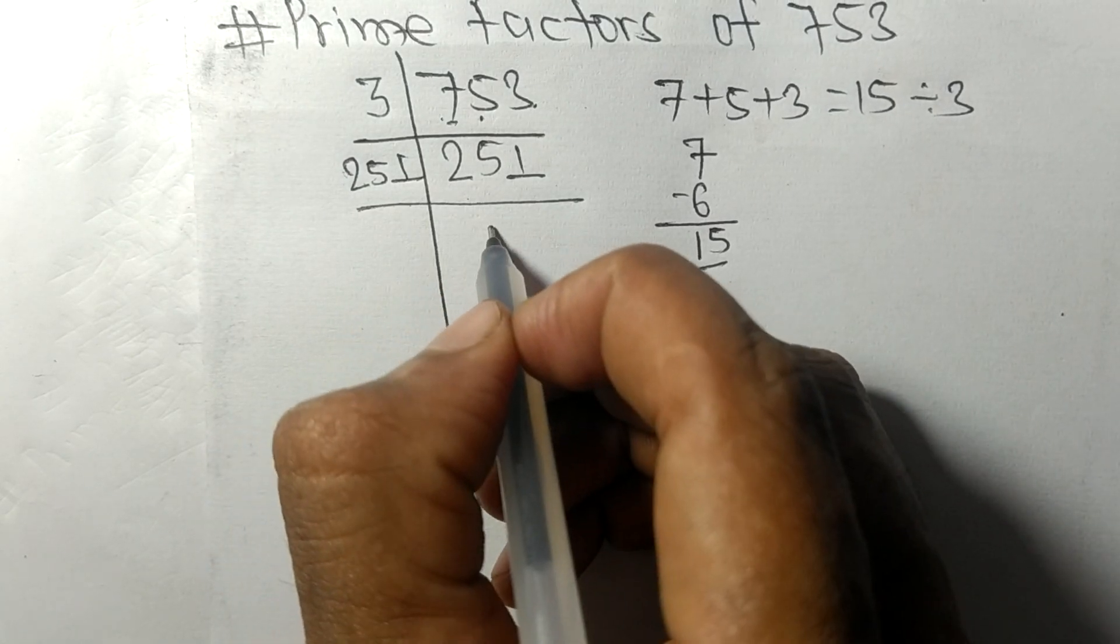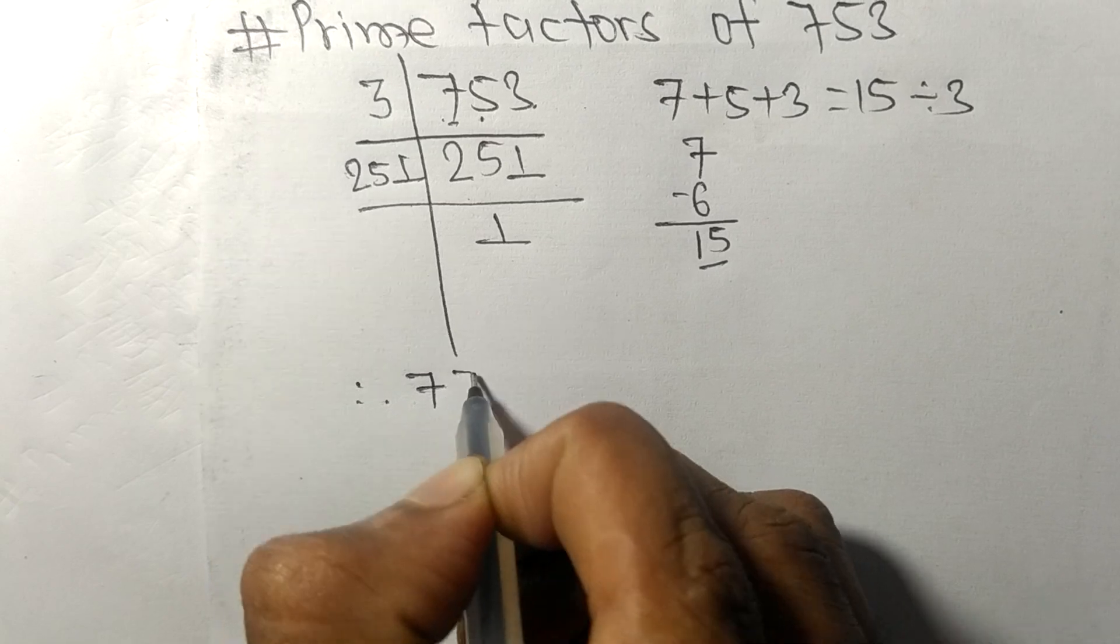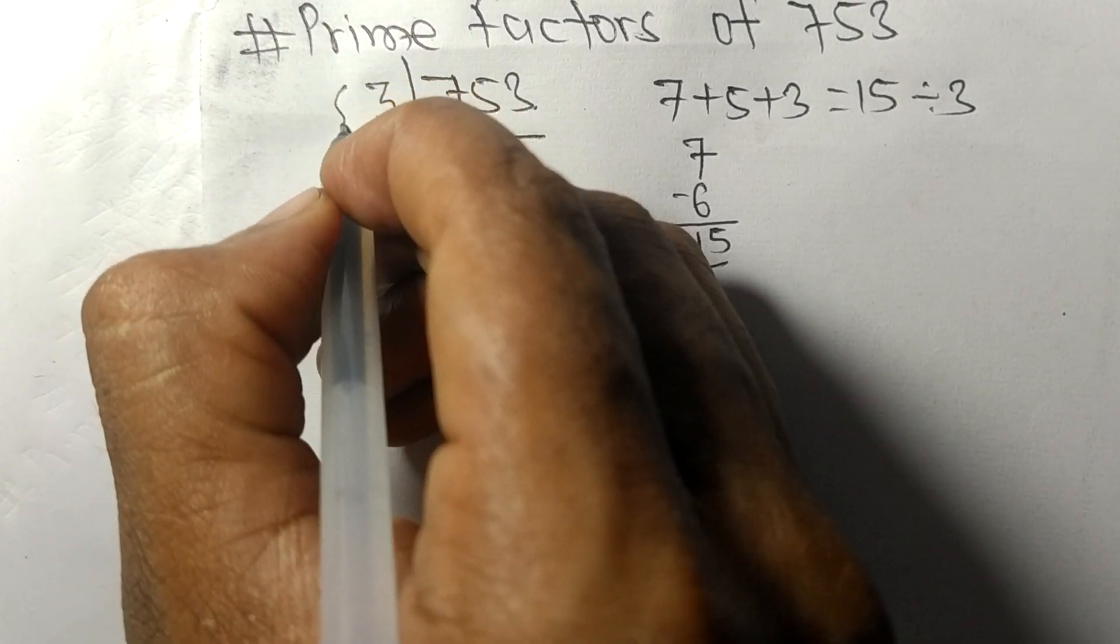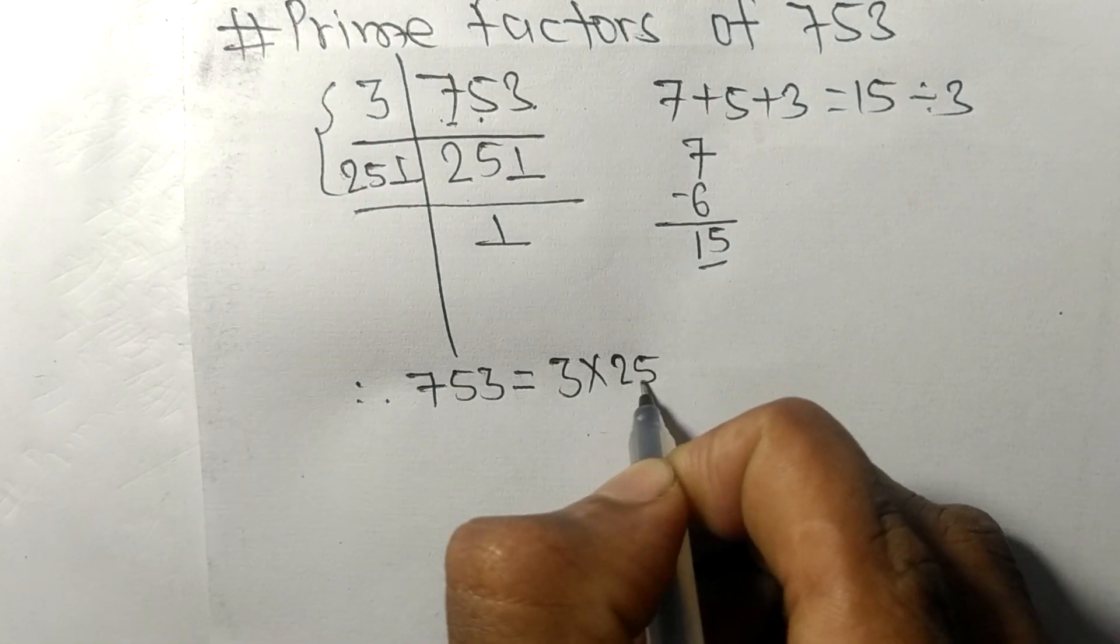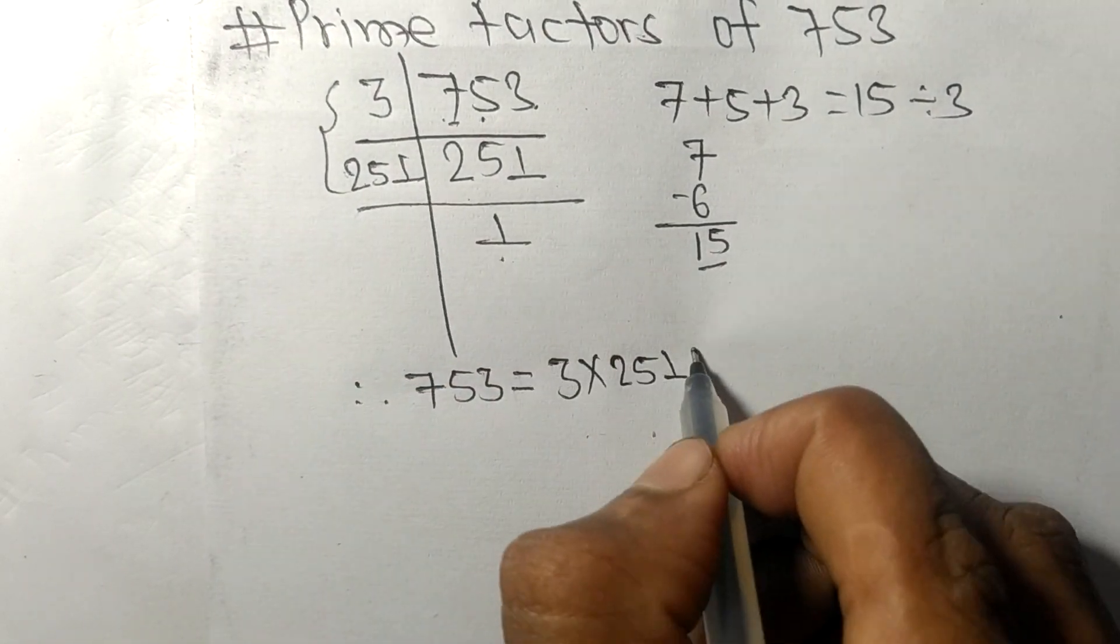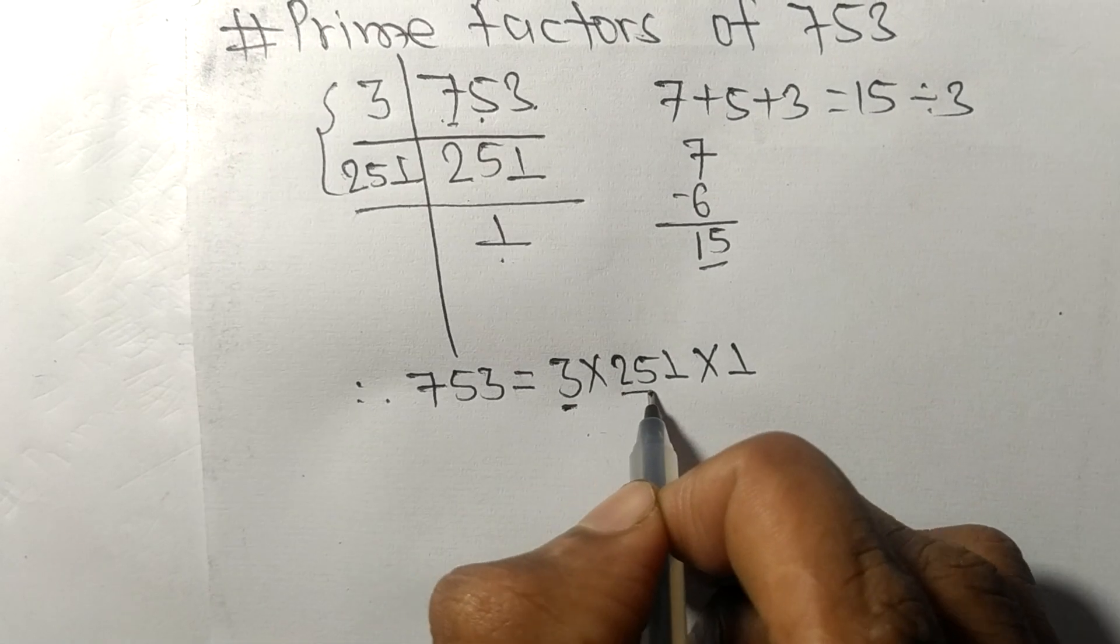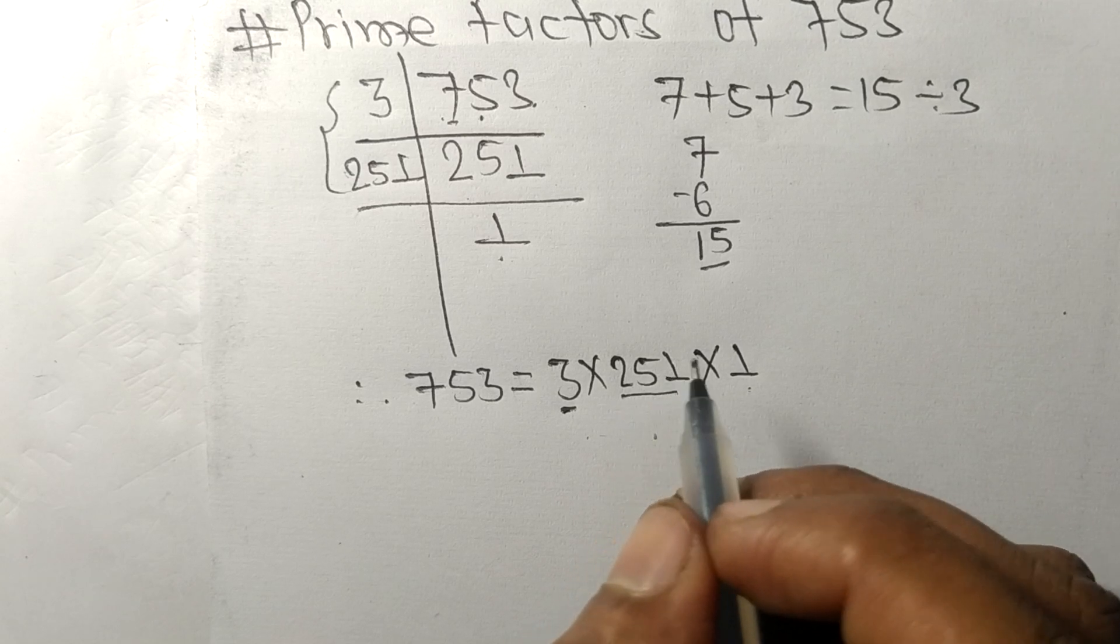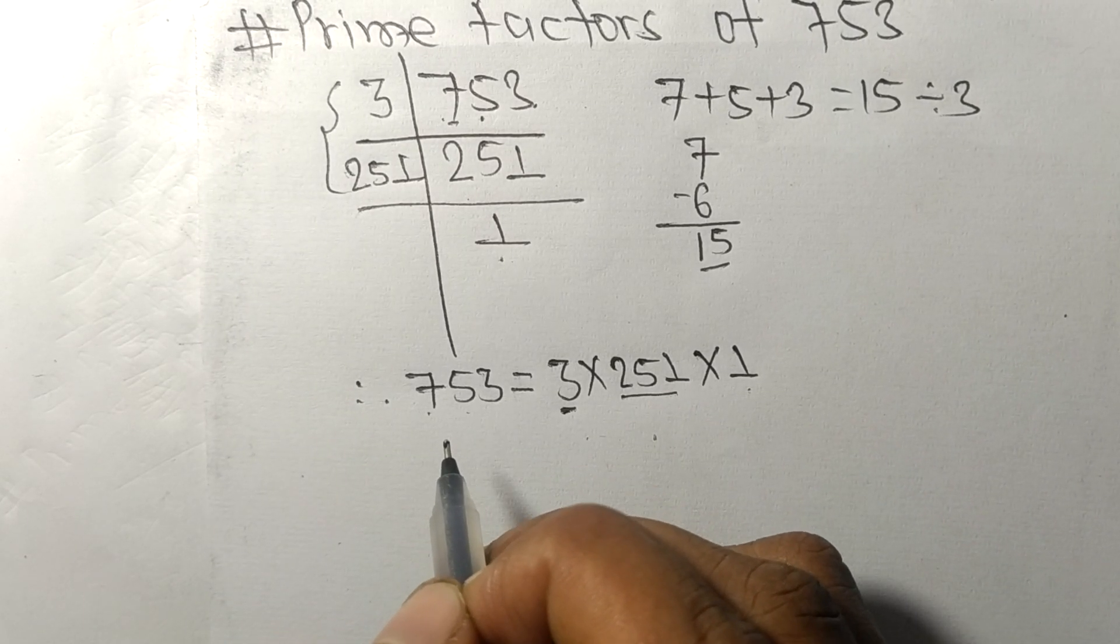Therefore, 753 is equal to, from this side it is 3 times 251, and from here it is 1. So 3, 251, and 1 are the prime factors of 753.